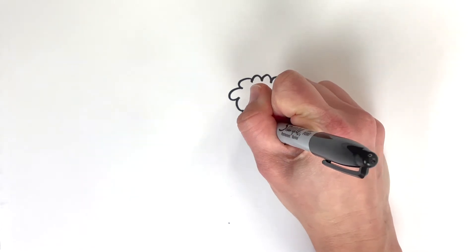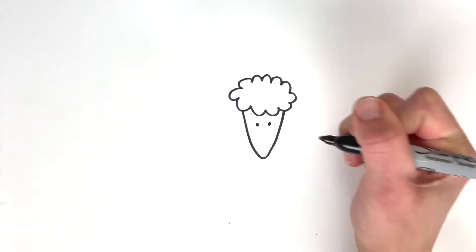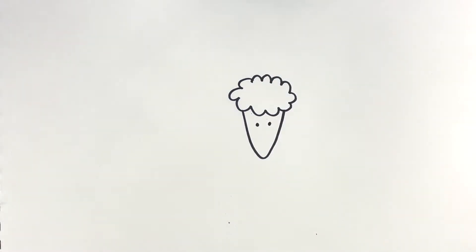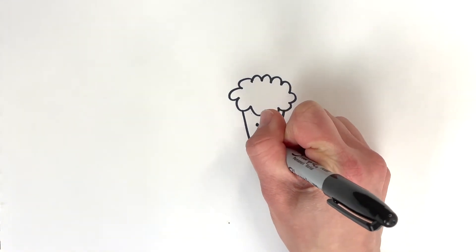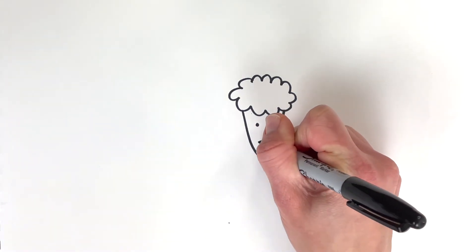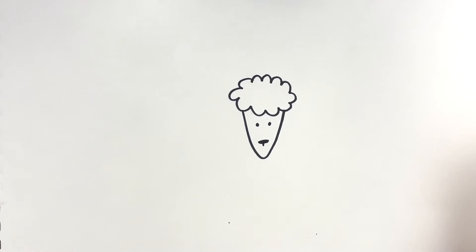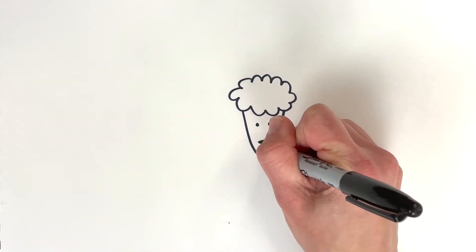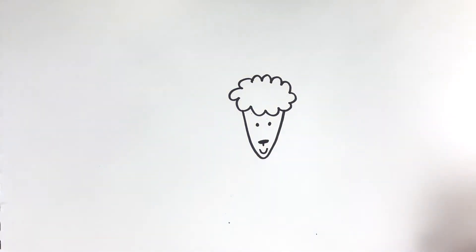And then I'm going to draw almost like an ice cream cone underneath it. And I will put in some eyes. And a nose. A little smile. Looks really funny right now. Looks like a smiling ice cream cone.